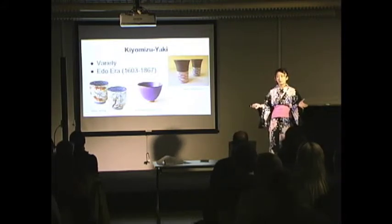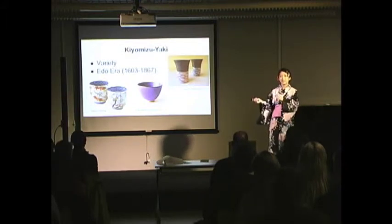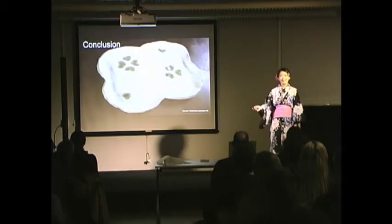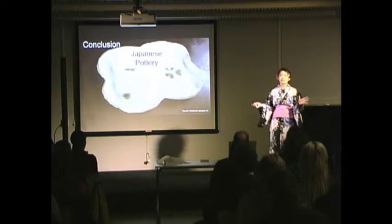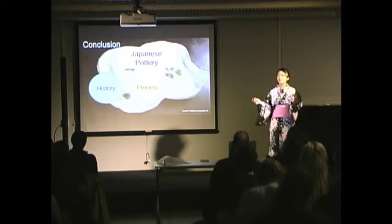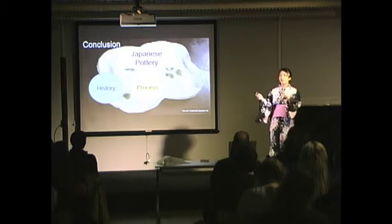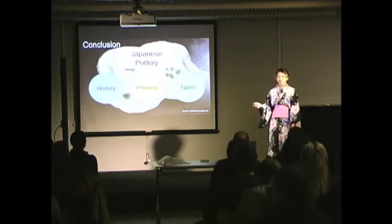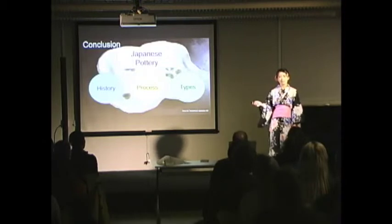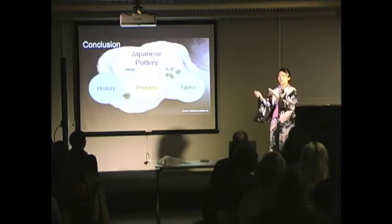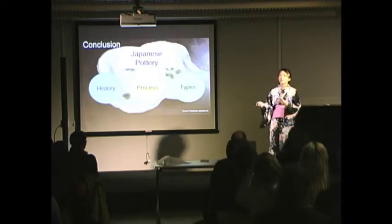Kiyomizu yaki became popular in the Edo era and is still known as famous pottery in Japan. In conclusion, Japanese pottery is influenced by other countries, especially Korea and China. However, many Japanese artists of pottery try to arrange it for Japanese people, so there are a lot of pottery styles in Japan. Recently, most pottery is made by machine, but there are still people who make pottery by hand to protect the Japanese traditional way.